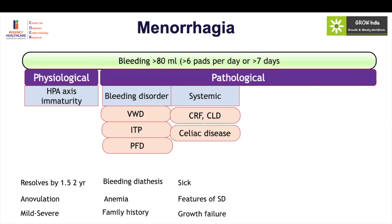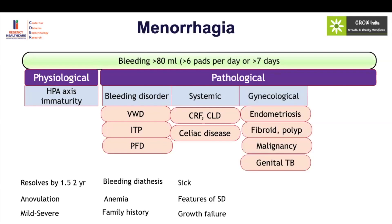Usually these children have features of growth failure, and the systemic disease features may also be present, so you should keep an open mind that this may not be a purely gynecological case. Less than five to ten percent of girls presenting with menorrhagia in the adolescent age group have core gynecological problems like endometriosis, fibroid, malignancy, or genital tuberculosis. The key feature to identify whether this is a gynecological cause would be pain. If the girl is having irregular cycles with pain, that should be a pointer towards a gynecological cause, and most gynecological causes would be picked up on imaging.